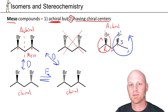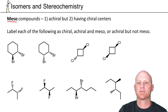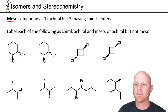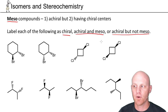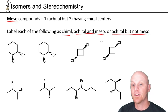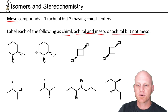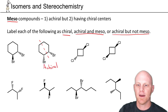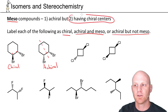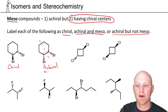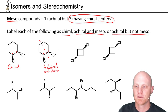Now that we've learned about meso compounds, let's get good at identifying them. Here are eight examples to label as either chiral, achiral and meso, or achiral but not meso. Recall that all meso compounds are achiral, but not all achiral compounds are meso. Looking at the first two: the one on the right has the internal mirror plane, making it achiral, whereas the one on the left doesn't have it and has two chiral centers — that one is plain old chiral. The right one is achiral and has two chiral centers, so it's achiral and meso.